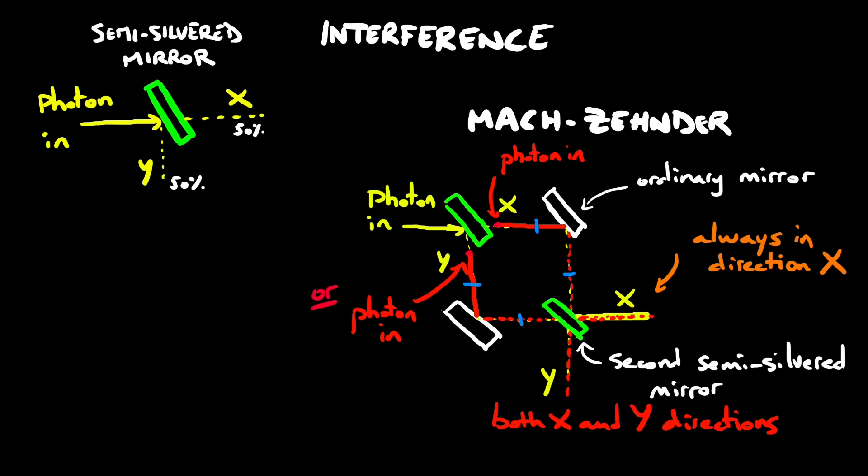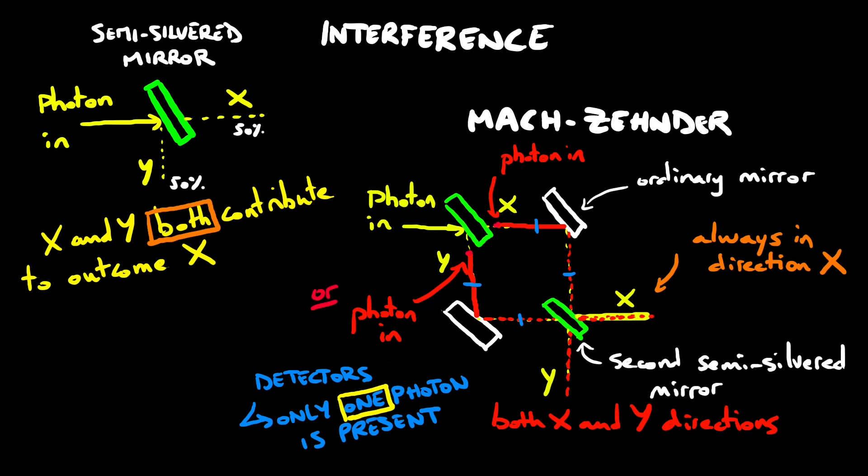By doing the experiment repeatedly with and without detectors on the path, one can verify that only one photon is ever present, because only one of those detectors is ever observed to fire during such an experiment. What it means is that the intermediate histories x and y both contribute to the deterministic final outcome x. Both are happening at the intermediate time.